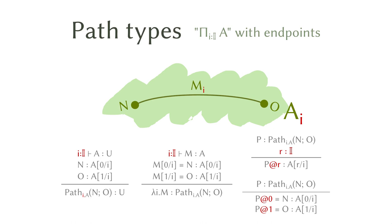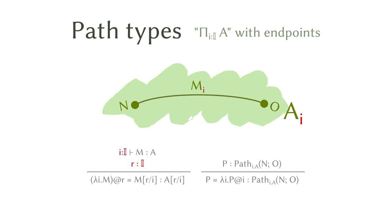The next thing is about what happens when you use something constructed from lambda. The beta rule says: if you construct an element in the path type with lambda and then do the application, that gives you back the element at location R described by M. And the uniqueness principle says that for any element P in the path type, it can always be rewritten using lambda notation — P is judgmentally equal to lambda i dot (P at i).